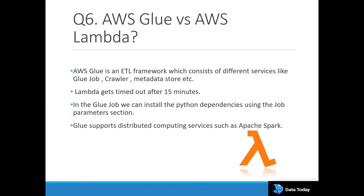Another important question for data engineering interviews is: what is the difference between AWS Glue and Lambda? AWS Glue is an ETL framework that consists of different services like GlueJob, GlueCrawler, and metadata store. Lambda has Lambda functions with multiple related services. Lambda will time out after 15 minutes, but a GlueJob will run until the task is complete. For installing Python dependencies in Glue, you go to the GlueJob parameters section and add the Python dependency as a key-value pair — the key is the dependency name and the value is the file location. Glue also supports distributed computing like Apache Spark, enabling big data processing and parallelism.